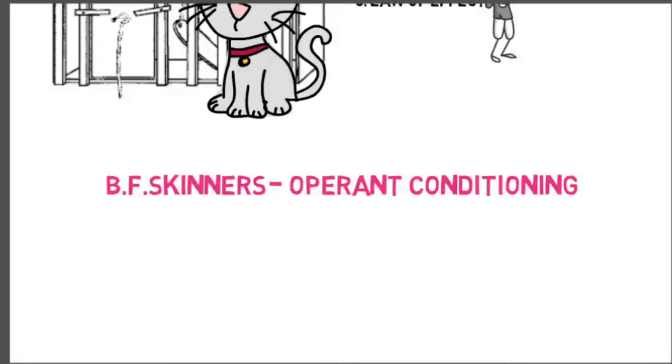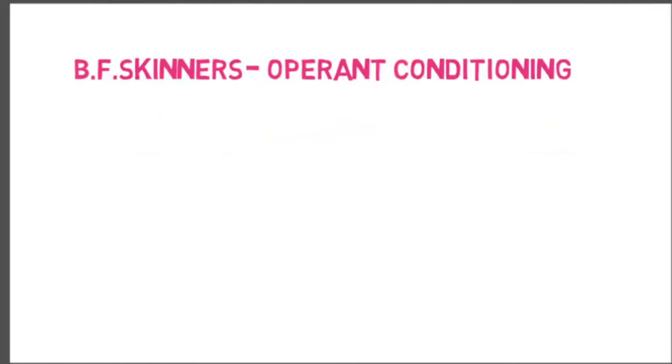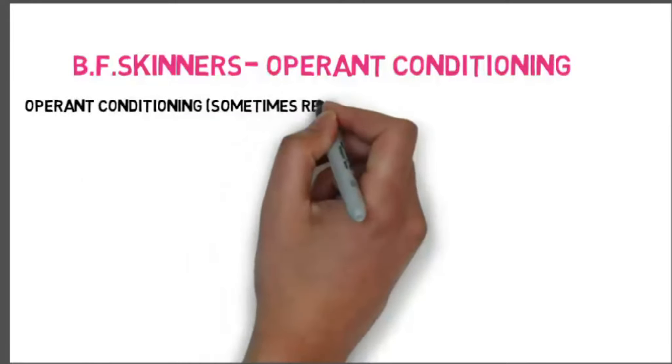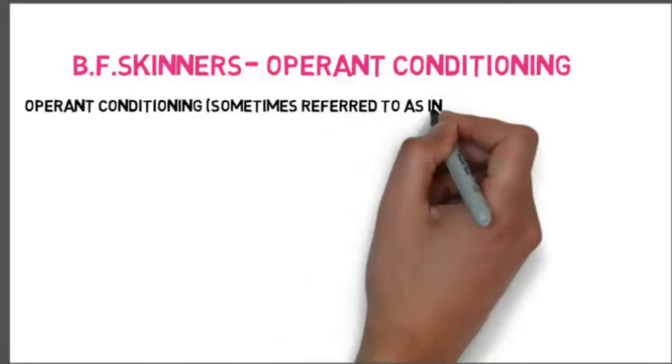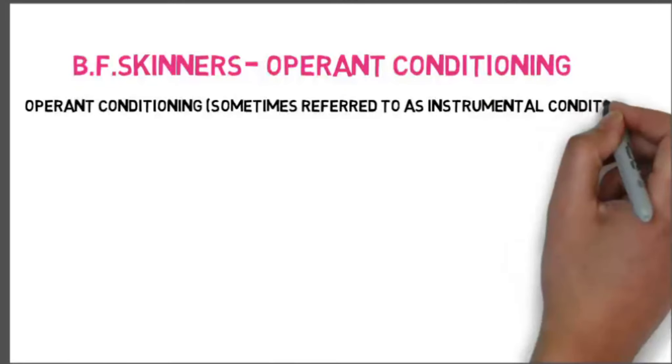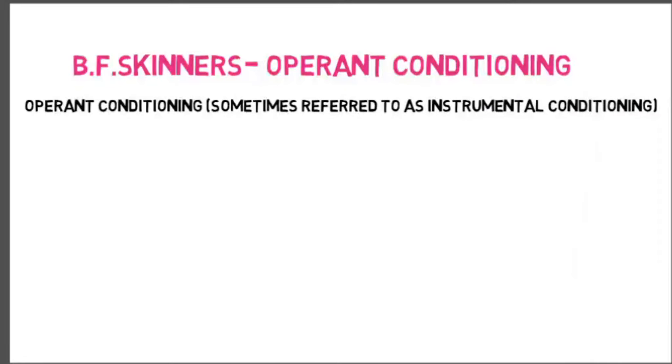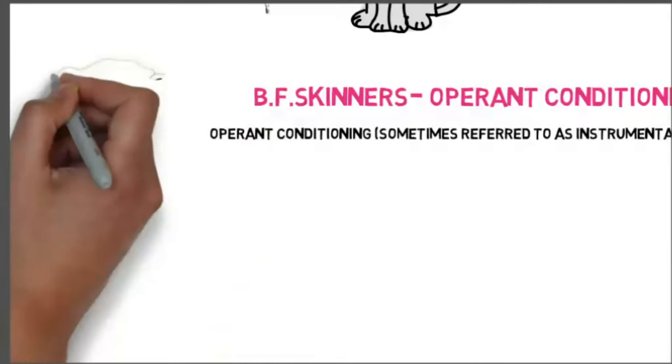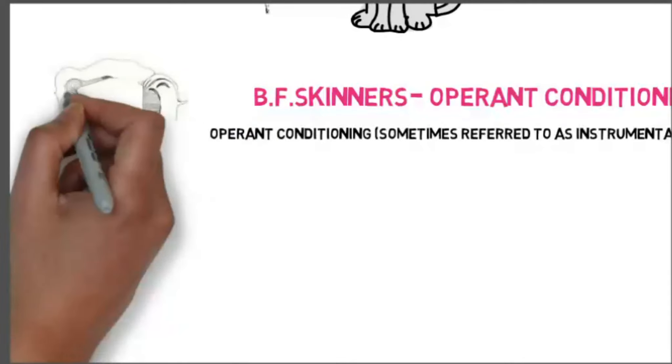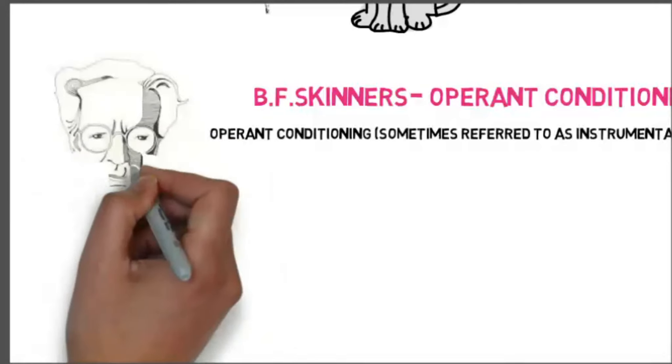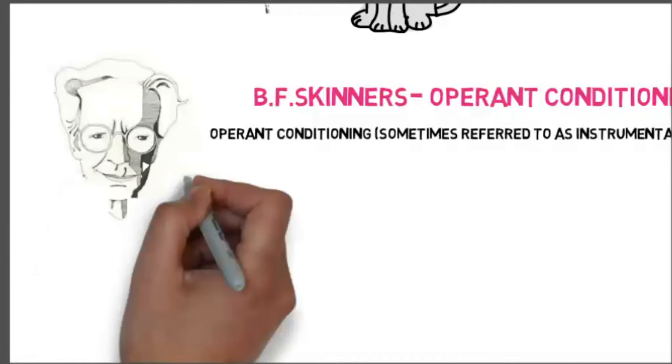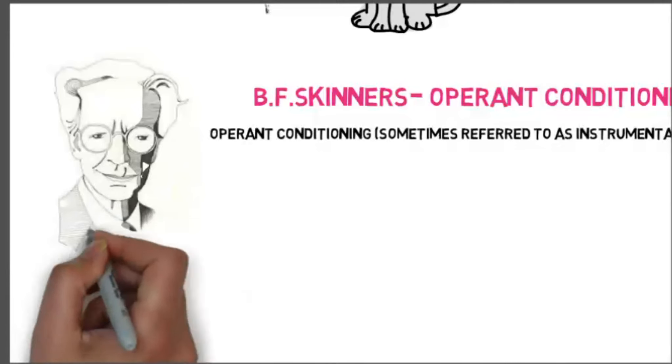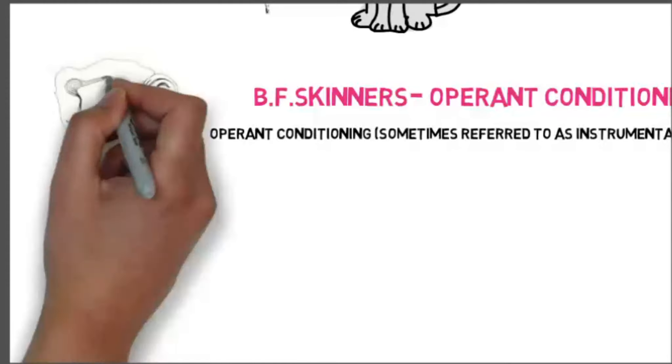The behaviorist B.F. Skinner coined the term operant conditioning, which is why it is also referred to as Skinnerian conditioning. As a behaviorist, Skinner believed that internal thoughts and motivations could not be used to explain behavior. Instead, he suggested we should look only at the external, observable causes of human behavior. Skinner used the term operant to refer to an active behavior that operates upon the environment to generate consequences. In other words, Skinner's theory explained how we acquire the range of learned behaviors we exhibit each and every day.